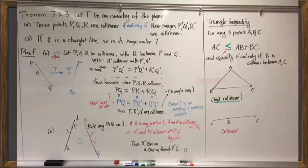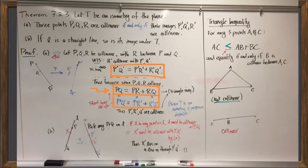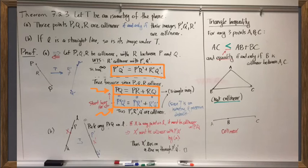Collinearity is preserved under an isometry merely because of the triangle inequality, which is our main tool for detecting when a triplet of points is collinear. If I start with three collinear points P, Q, and R, they satisfy the triangle inequality equation. Their images under an isometry — because isometries preserve distances — satisfy the same equation, which again by the triangle inequality implies those three image points are collinear. The same argument works in reverse: there's no way for an isometry to either create or destroy collinearity. Three non-collinear points will remain non-collinear, and this extends to entire straight lines.